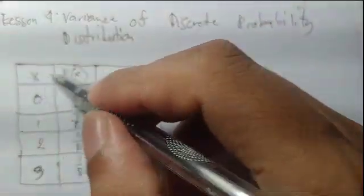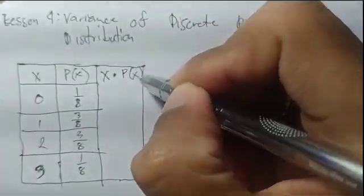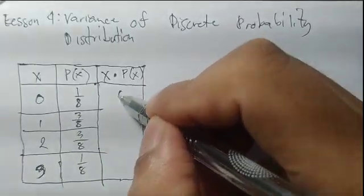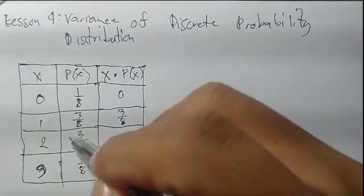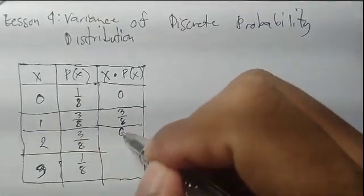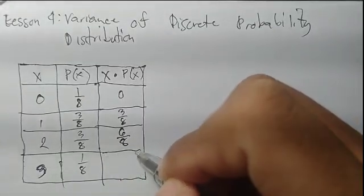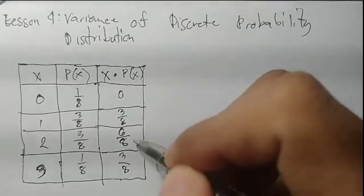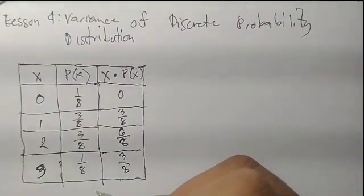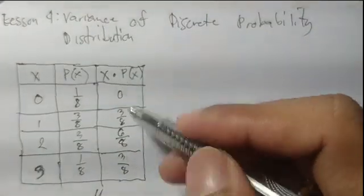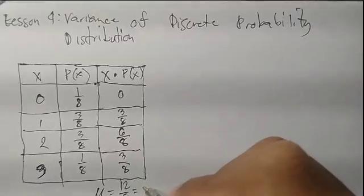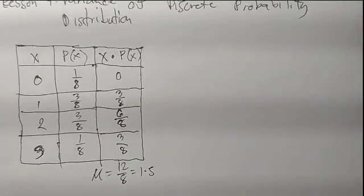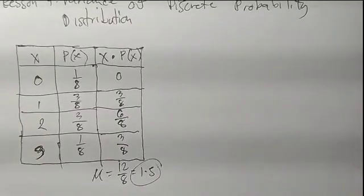To find the mean, we multiply each value by its corresponding probability. So: 0 times 1 over 8 is 0; 1 times 3 over 8 is 3 over 8; 2 times 3 over 8 — multiply the numerator by the whole number — gives 6 over 8; and 3 times 1 over 8 gives 3 over 8. The sum is 3 plus 6 plus 3 equals 12 over 8, or 1.5. So our mean is 1.5.